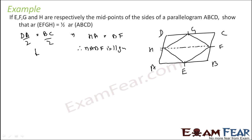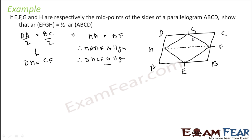Also, similarly, DA by 2 is DH and BC by 2 is CF. So if DH equals CF and DH is parallel to CF, I can say that DHCF is a parallelogram. So this means HABF is a parallelogram and DHCF is a parallelogram. Now we have to prove that area of EFGH is equal to half of ABCD.